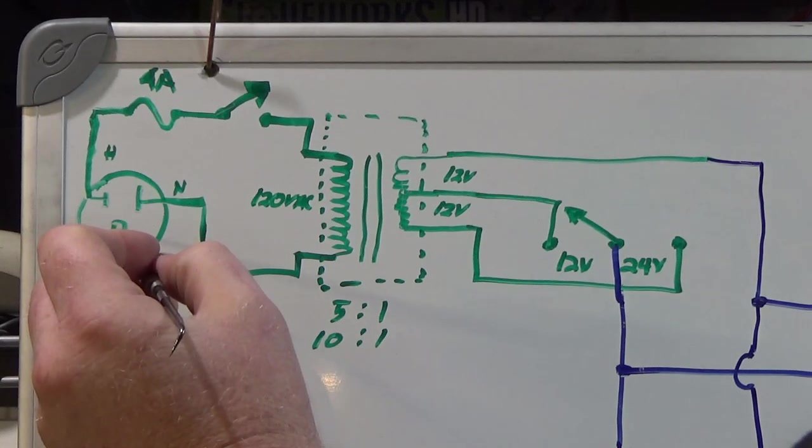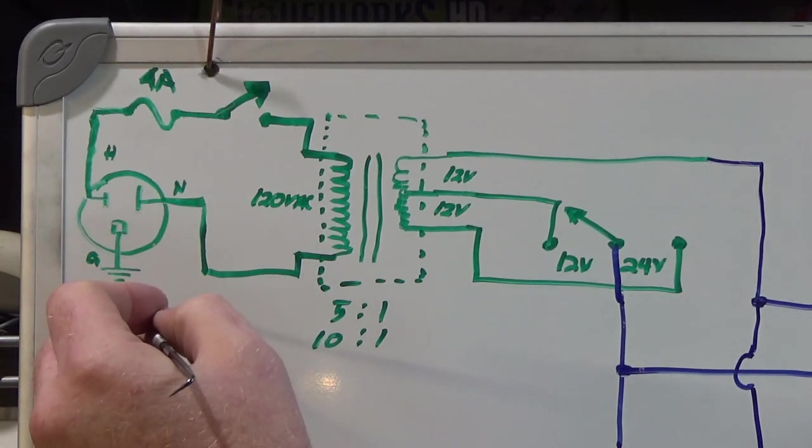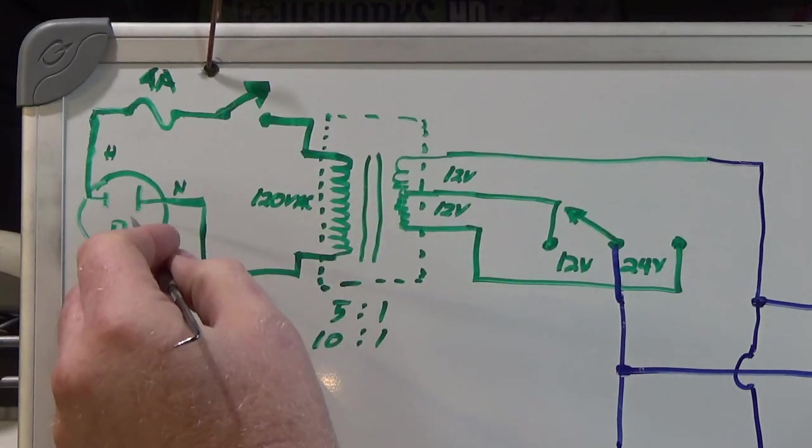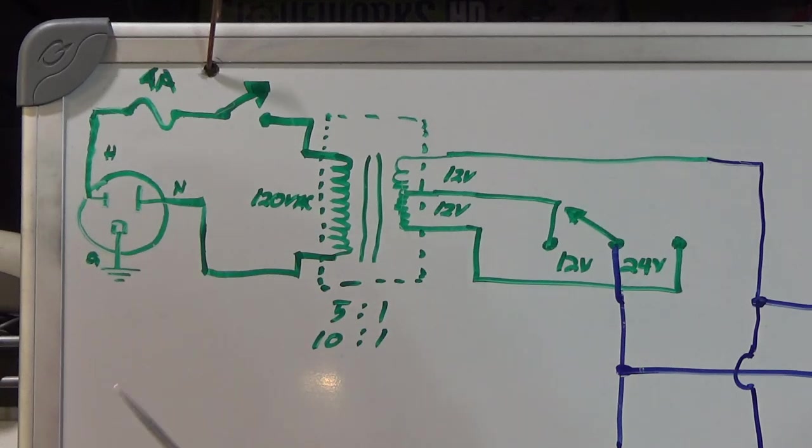The D-shaped pin on our wall outlet is ground. If you had a metal case, if you were building this in a metal case, you should attach this lead to the outside of the case. Mine's plastic, so I don't have it attached.